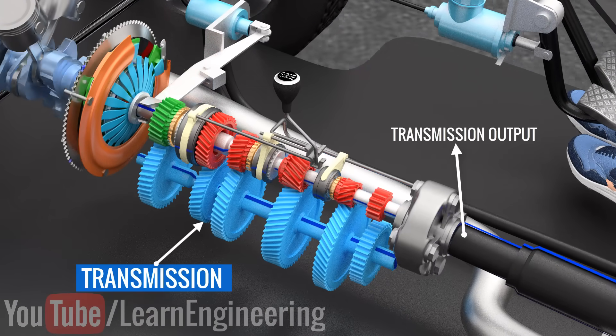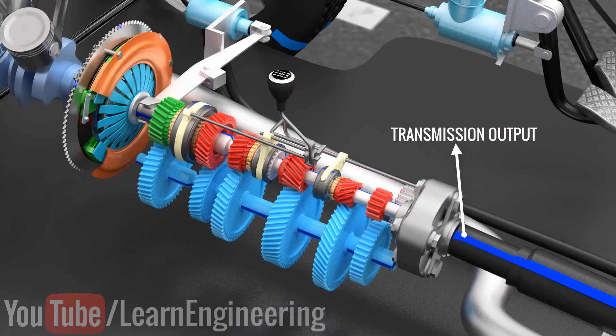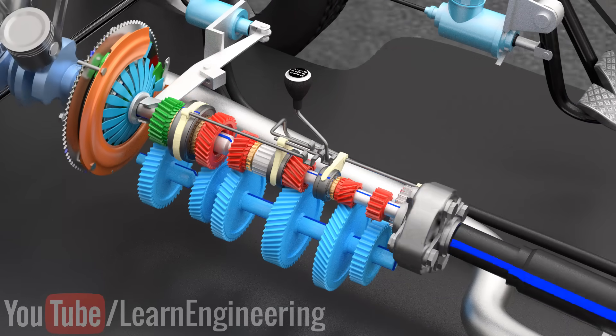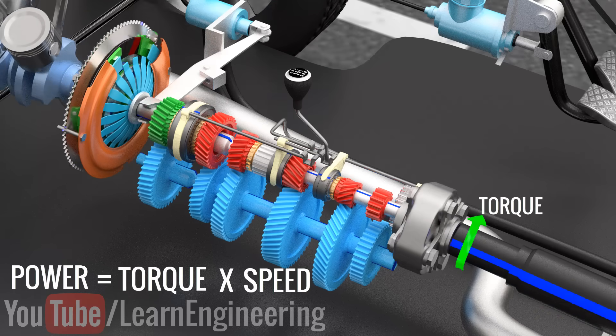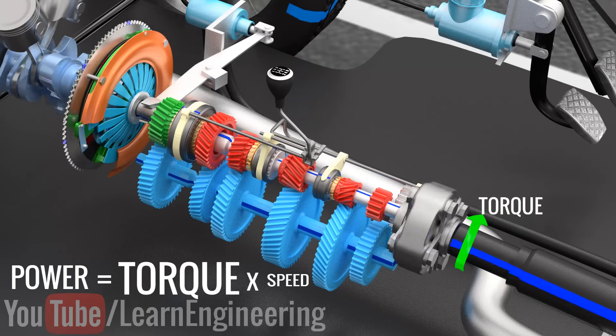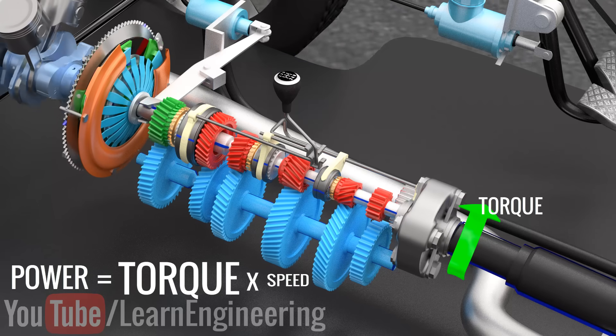At the transmission output, you can easily get different speeds by using the gear stick. Since the power produced is the product of torque and angular speed, by reducing the output speed, you will be able to get higher torque or vice versa.